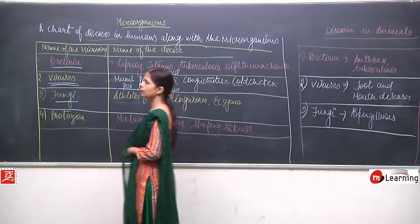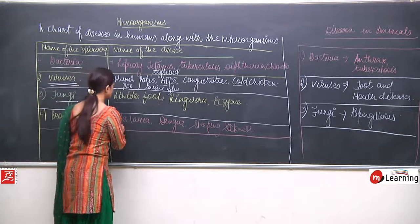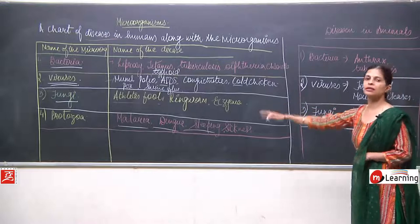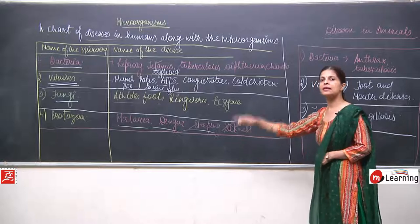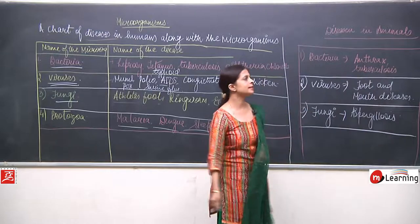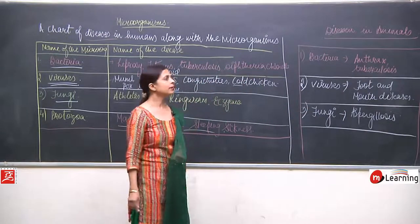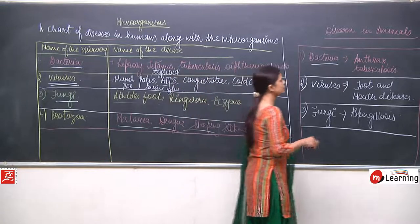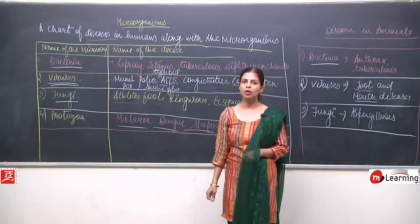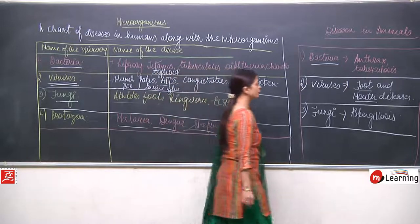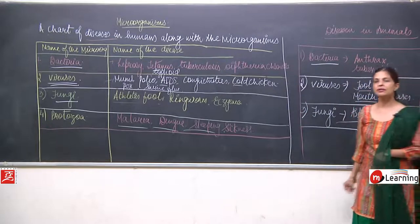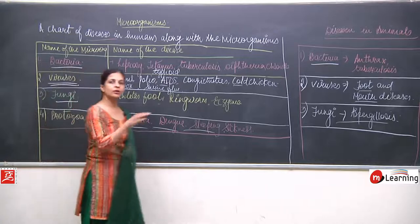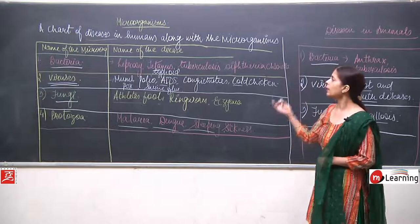When we talk about protozoans, as I gave one example about plasmodium, diseases like malaria, dengue, and sleeping sickness are all due to protozoans. This whole chart is about the diseases in humans. Here I have written a few diseases which are commonly seen in animals — anthrax and tuberculosis are caused by bacteria in animals, foot and mouth diseases are caused by viruses, and fungi are responsible for diseases like aspergillosis.